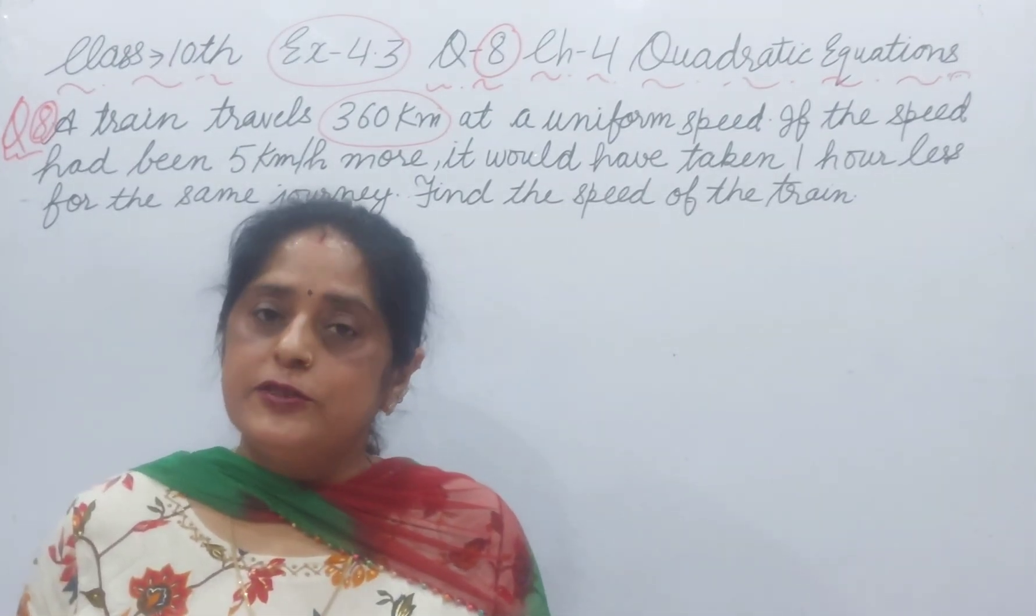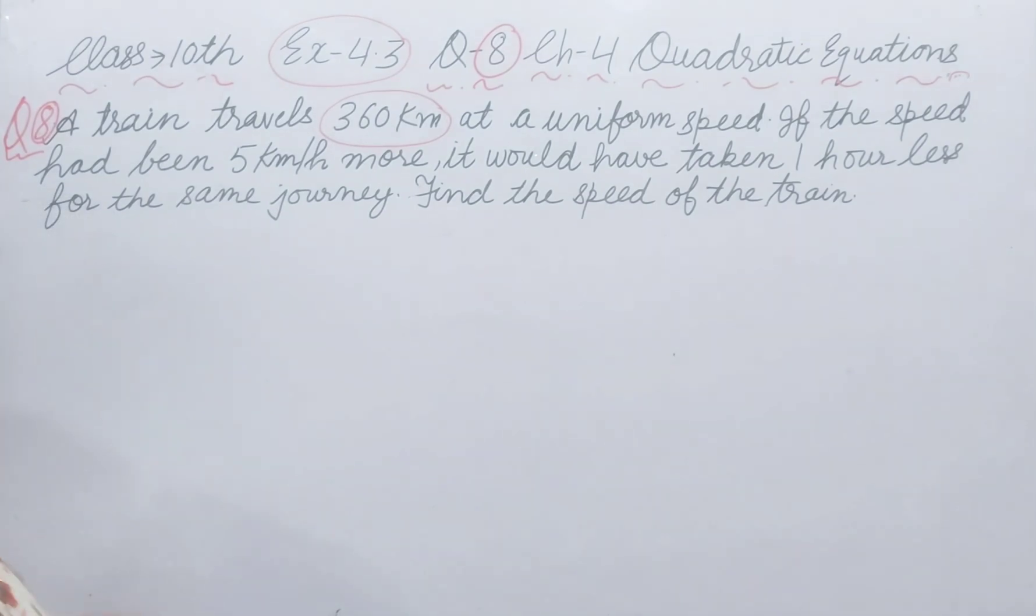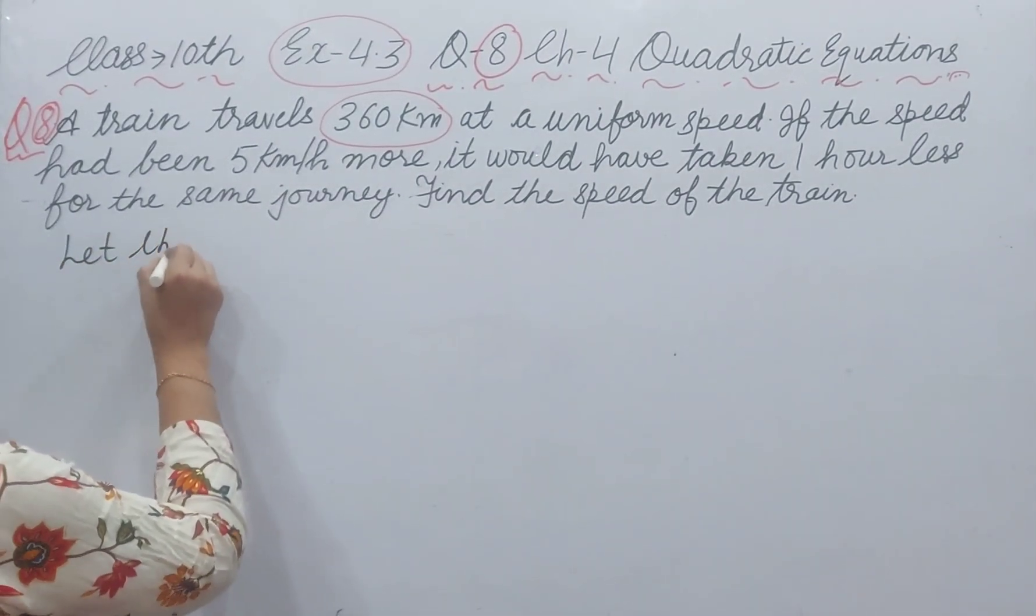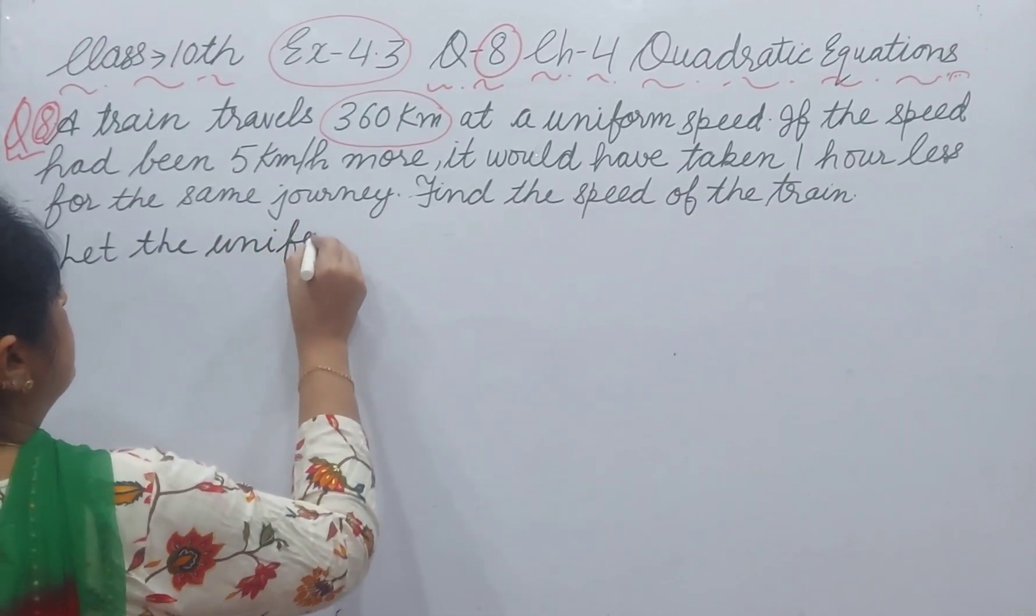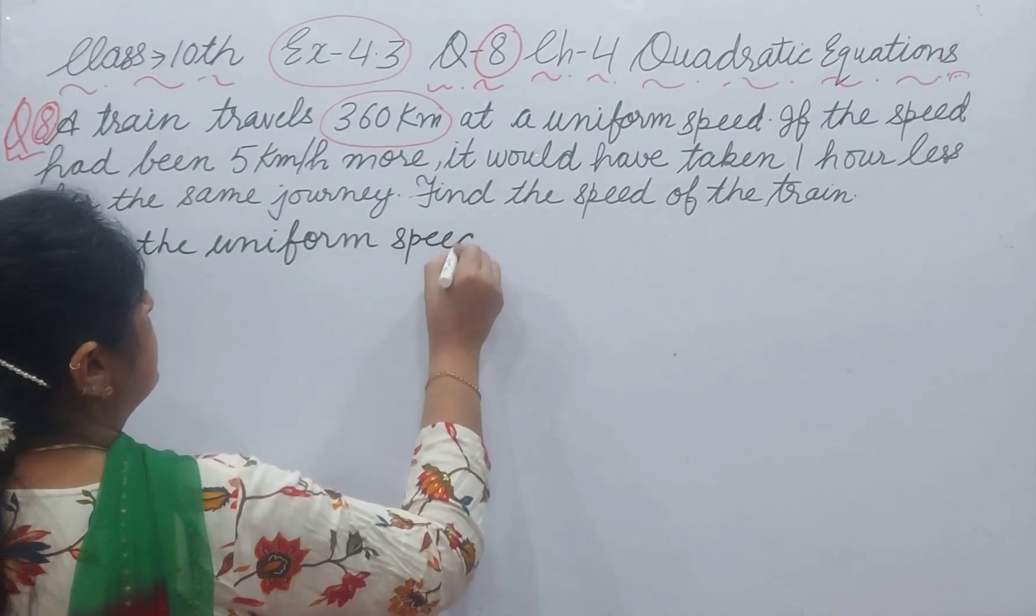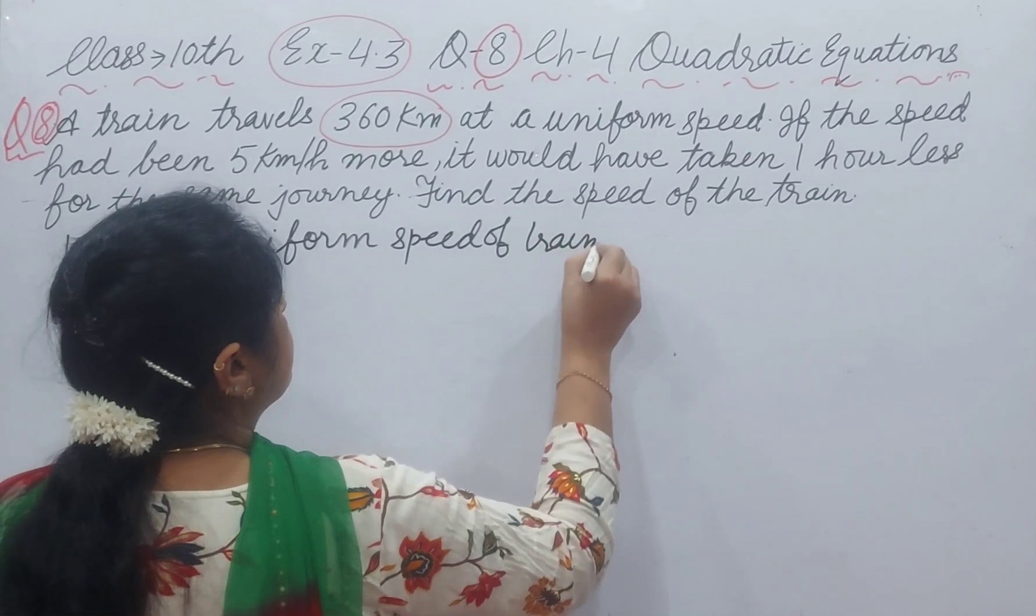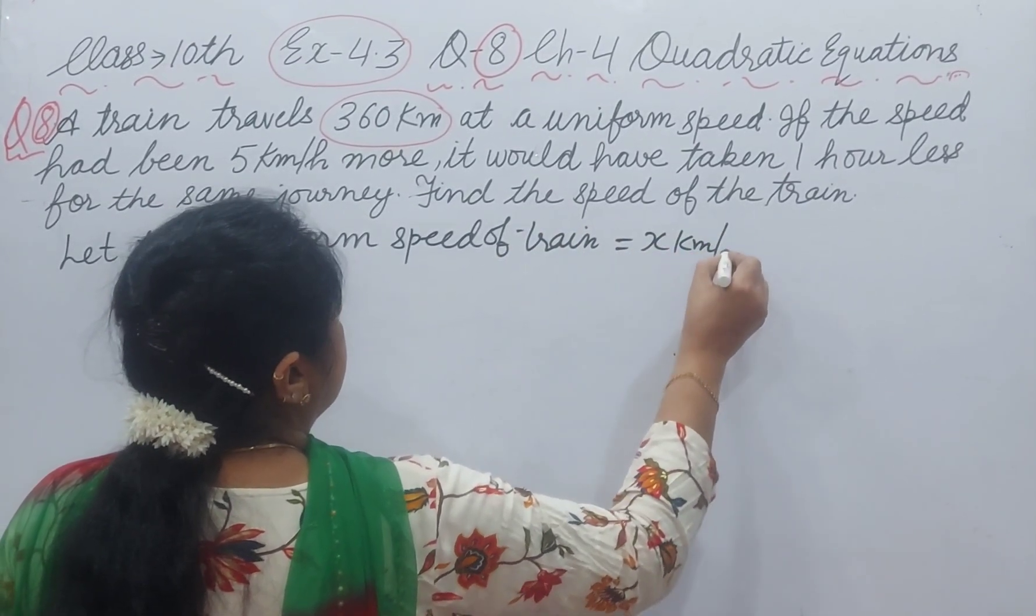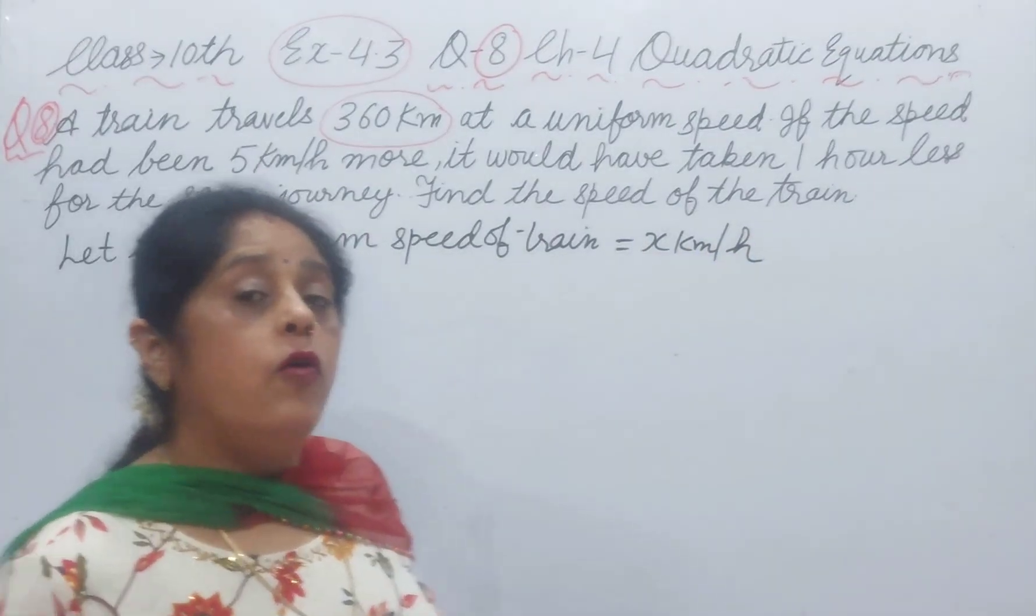First of all, we will assume the uniform speed of train. Let the uniform speed of train be x km per hour. You know the formula of speed.